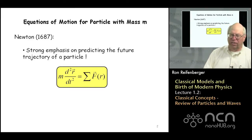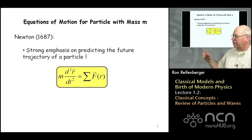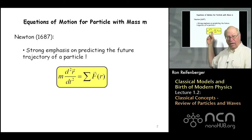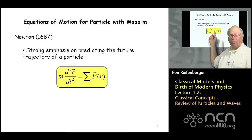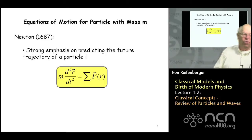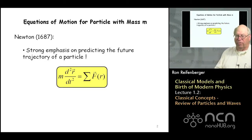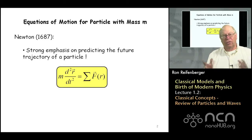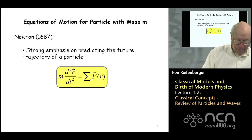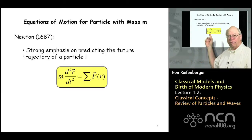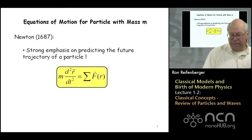Newton does this with his famous law of motion: the mass of the particle times the acceleration — the acceleration being the second derivative of the particle's position with respect to time — equals the sum of all forces acting on the particle. The forces that act on a particle are vector in nature, so you have to do a vector sum to calculate the right-hand side. This is the famous F equals ma equation you've learned in previous study of physics.